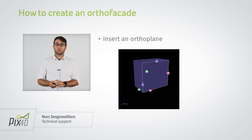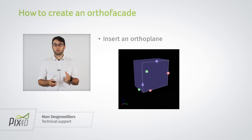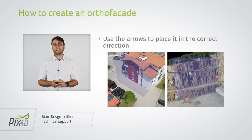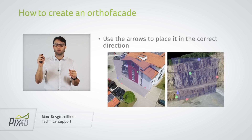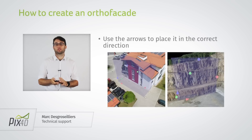When you insert the orthoplane, you should make sure that the green arrow is always pointing towards the façade of the building, as in the image that you see here. You can also adjust the size of the orthoplane by adjusting the red, blue, and green balls for the different directions.